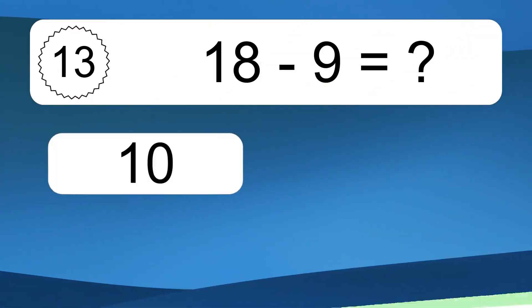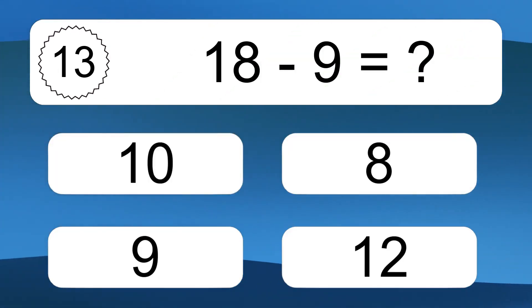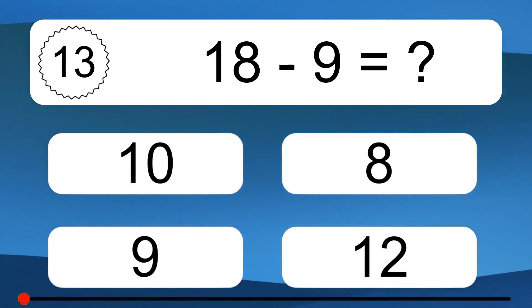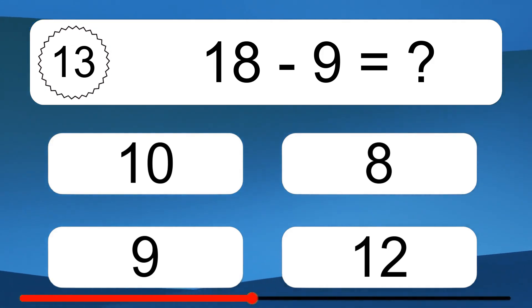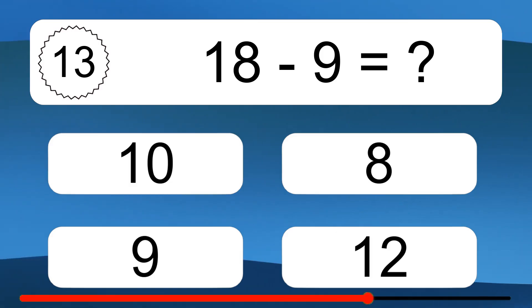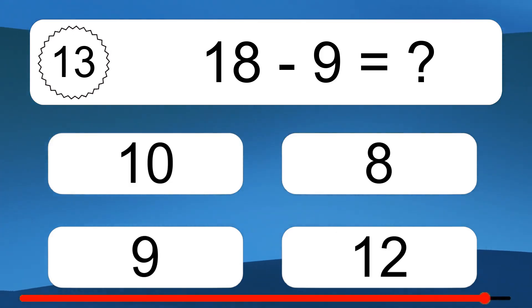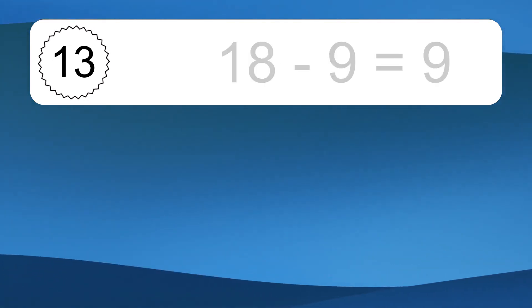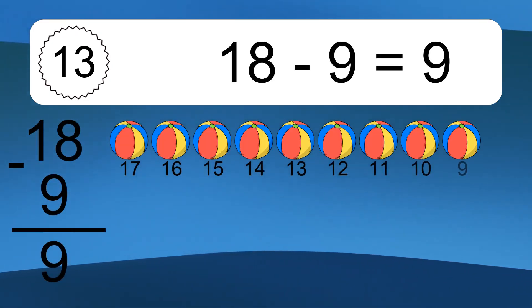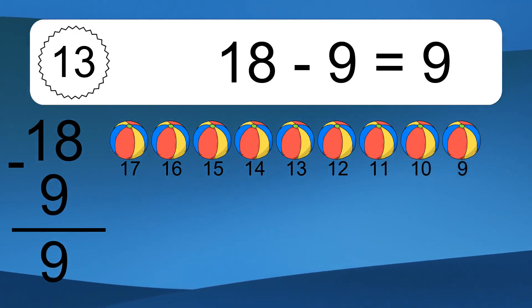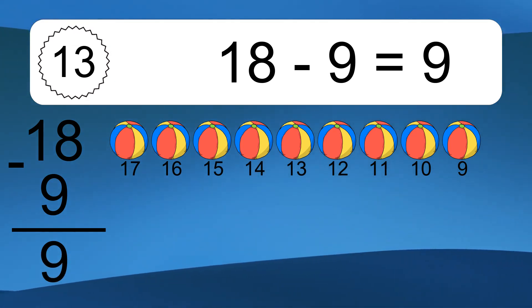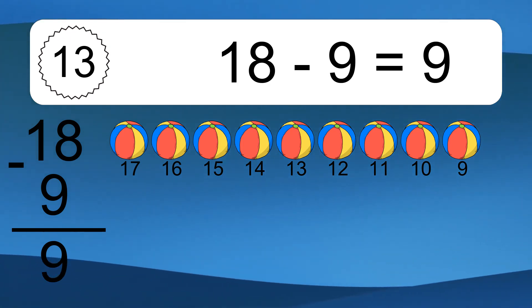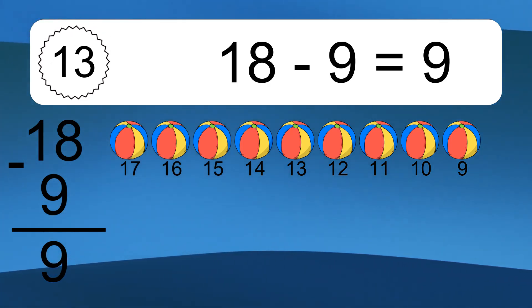18 minus 9 equals what? 18 minus 9 equals 9. Let's count it. 17, 16, 15, 14, 13, 12, 11, 10, 9.